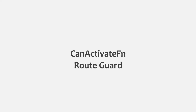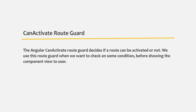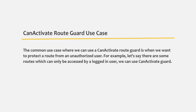In the last lecture we learned what a canActivate route guard is and what we use it for. Basically we use a canActivate route guard to decide if a route can be activated or not. We use this route guard when we want to check some condition before showing the component view to the user. The use case is we can use a canActivate route guard when we want to protect a route from an unauthorized user.